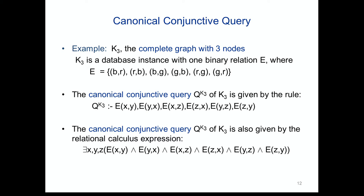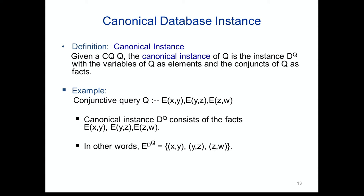More examples: if we have the clique with three elements, the canonical conjunctive query asserts there exist three elements with all symmetric edges present. This passage from query to database and from database to query is idempotent up to isomorphism. For instance, if the conjunctive query has three atoms forming a cycle, the canonical instance consists of those three facts — that edge relation has those pairs.